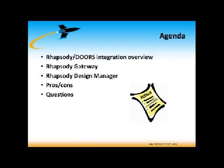We're going to start off with an integration overview for Rhapsody and Doors, just in case you aren't familiar with them, although if you're on this webinar, you probably are. Then we'll go into Gateway specifically — how to set up a project, how to do a little customization, how to trace requirements, and some of the caveats. We'll do the similar thing for Rational Design Manager, Rhapsody Design Manager, discuss the pros and cons, and I'll give you a suggestion or two on which one you might want to use, and then I'll take your questions.